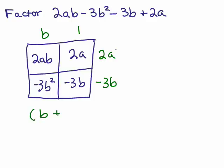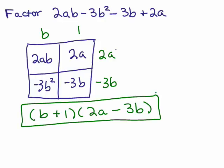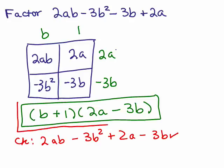So that's our answer: b plus 1 times 2a minus 3b. Now I'm going to go ahead and check this by doing the FOIL method. I'm going to do first outer inner last. b times 2a is 2ab. The outer is minus 3b squared. The inner is plus 2a and the last is minus 3b. And the original problem had exactly the same 4 terms, so yes, this is the correct factored form.